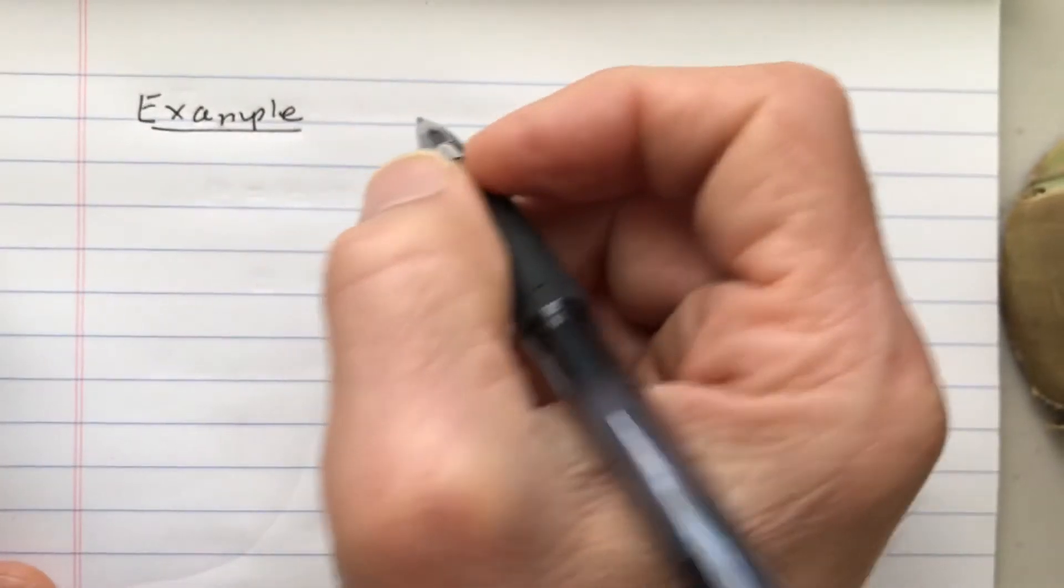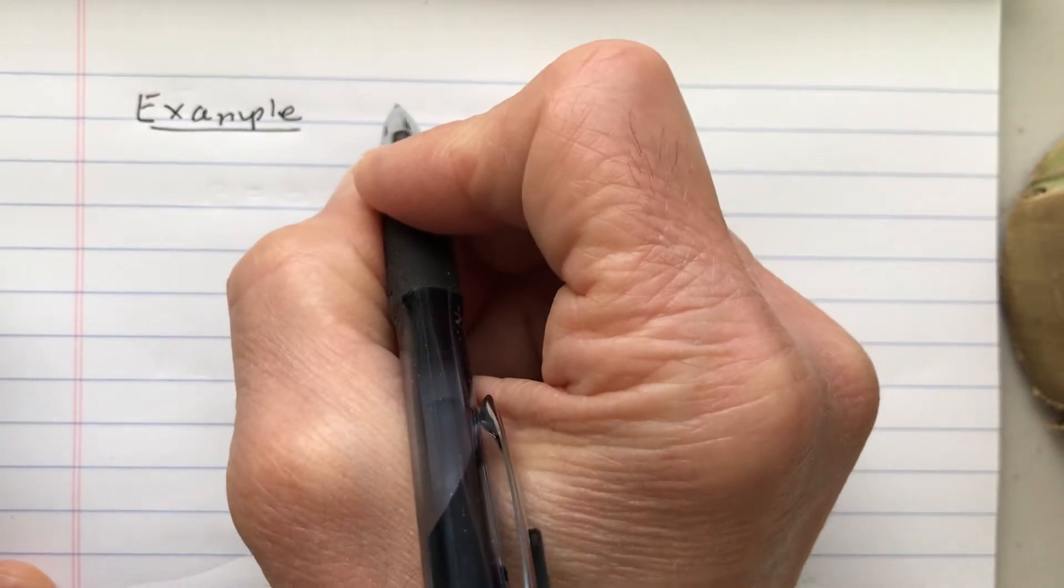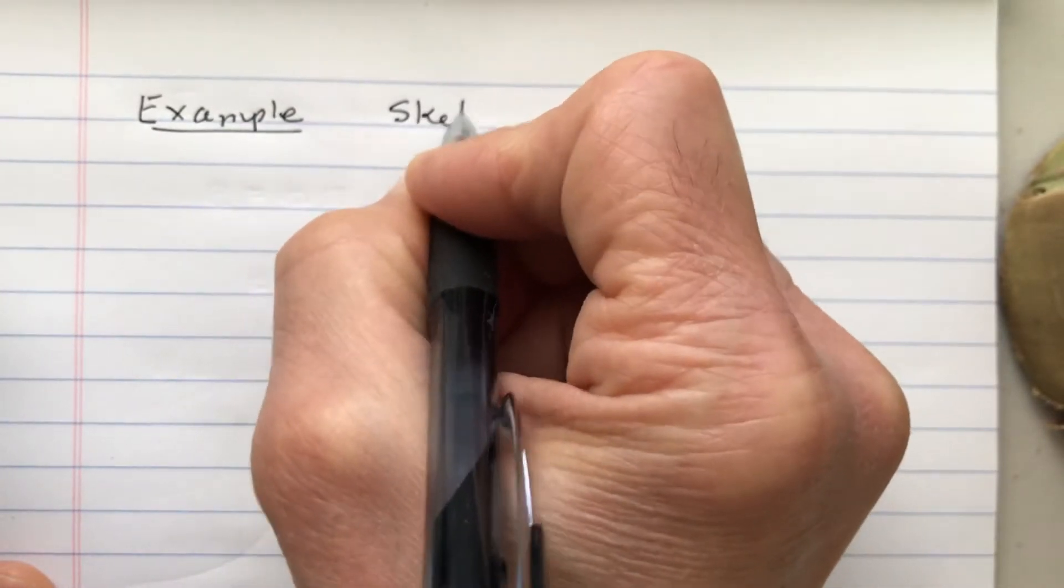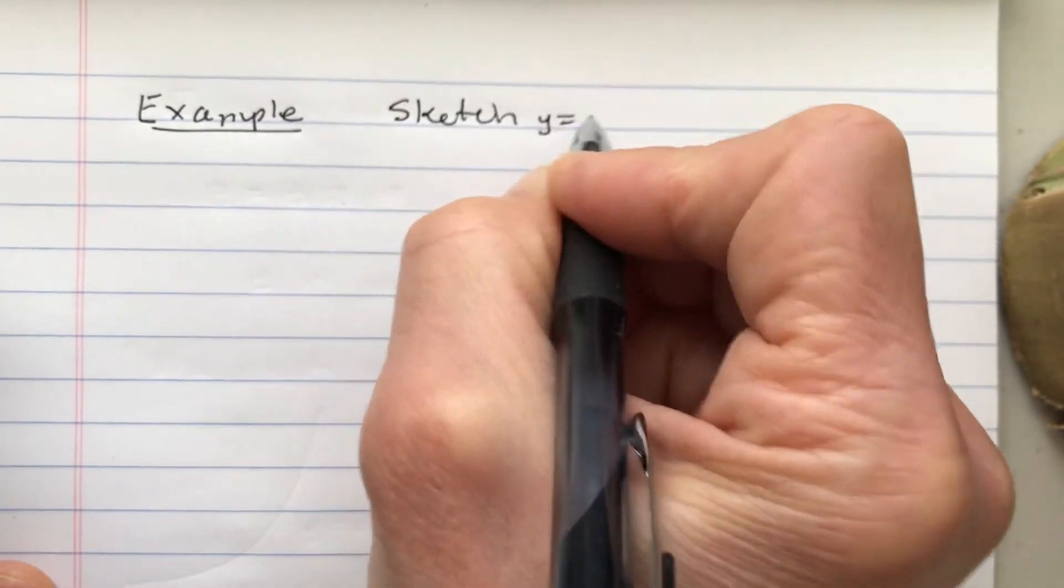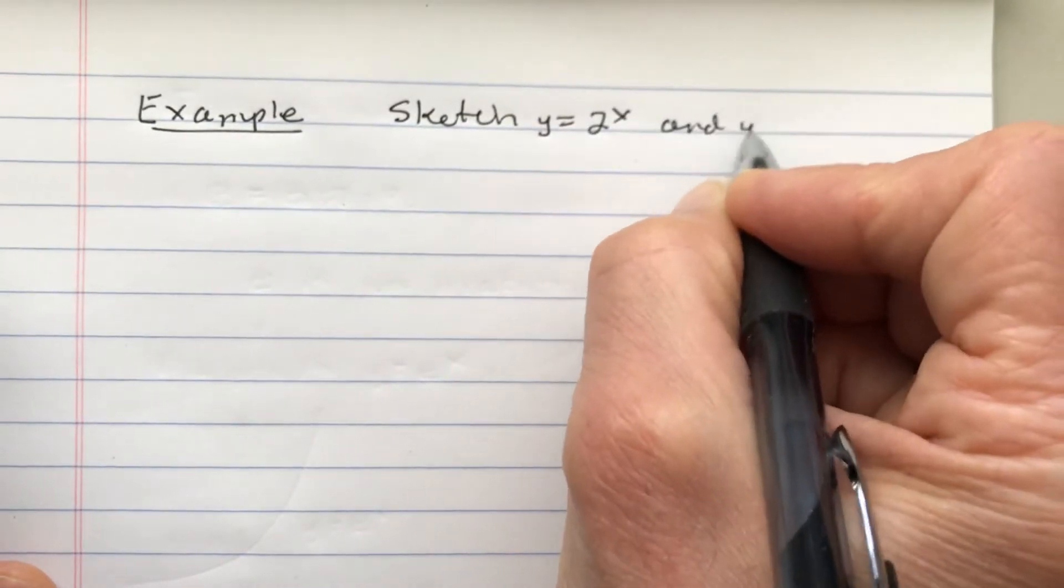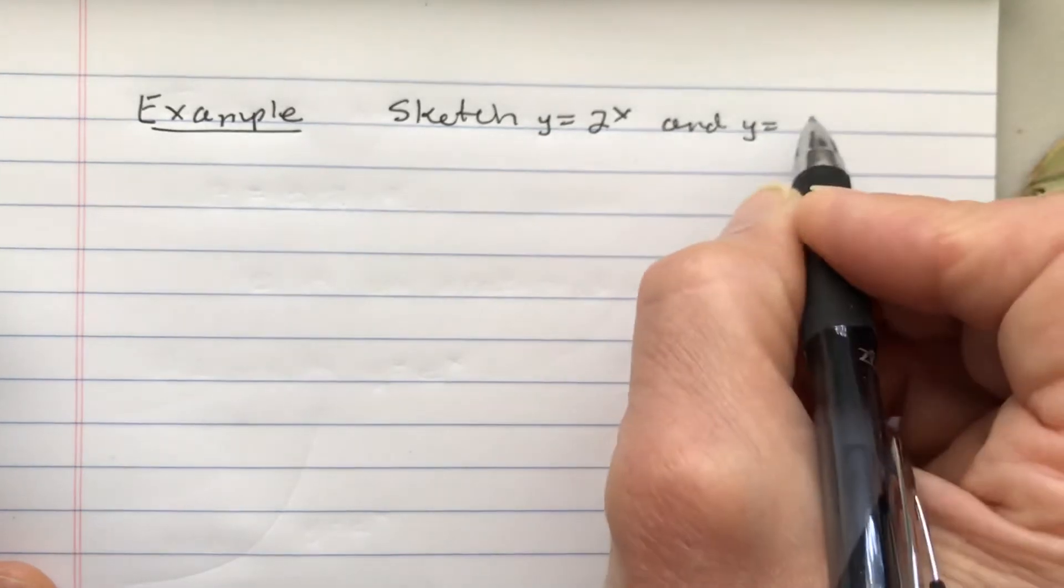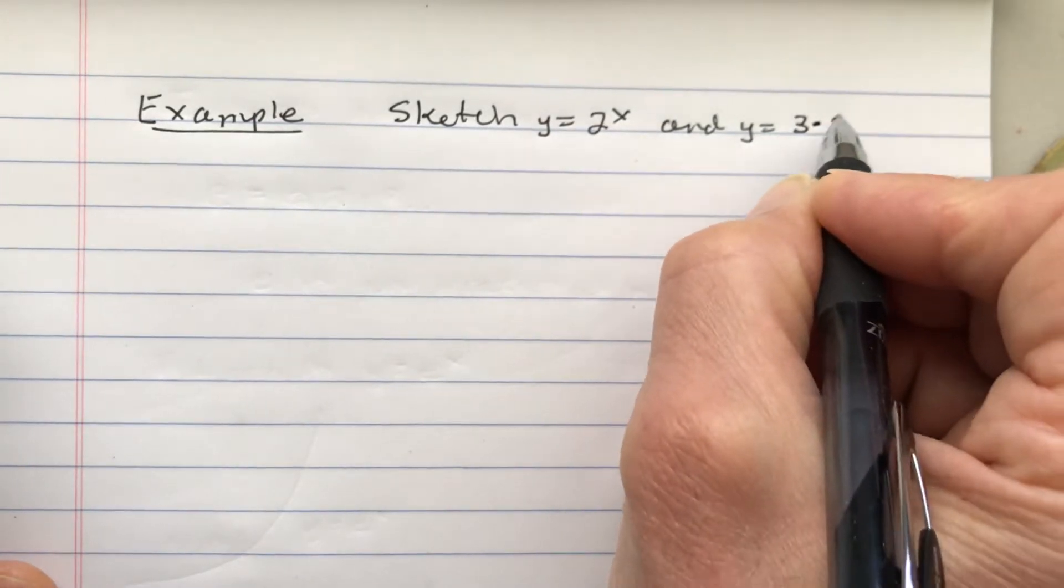For this example, what we're going to do is we're going to sketch y equals 2 to the x and y equals 3 times 2 to the x.